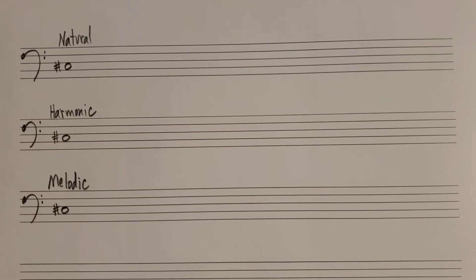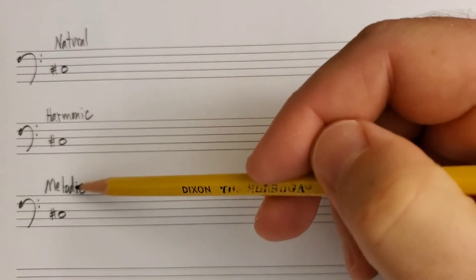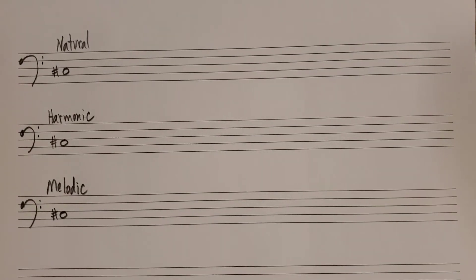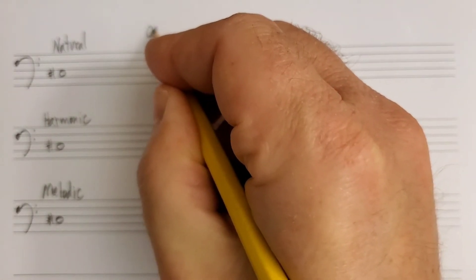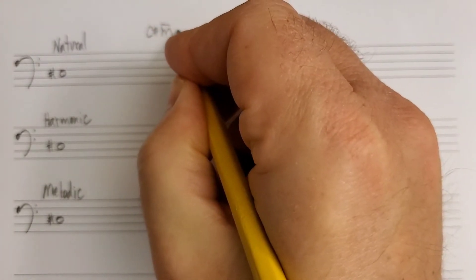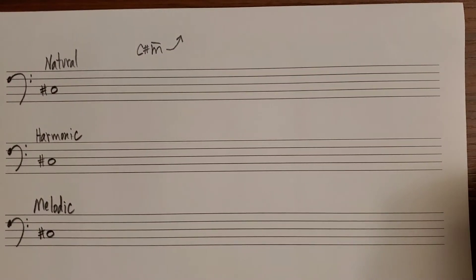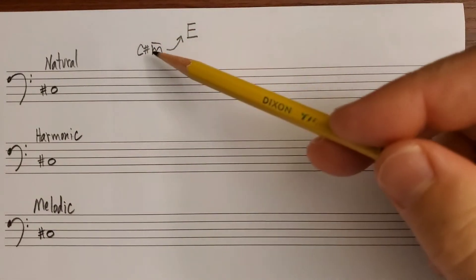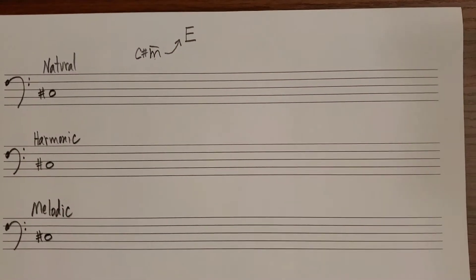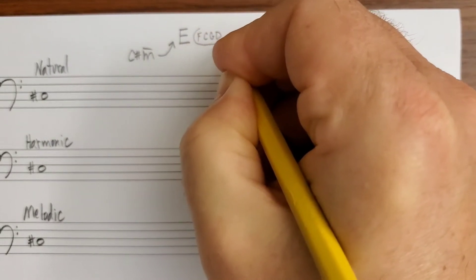Next we're going to take a look at C sharp minor in the bass clef. We'll write natural minor, harmonic minor, and melodic minor for C sharp minor. The first step again is to figure out the key signature. If we're given C sharp minor, think up three half steps to the relative major: C sharp to D, D to D sharp, D sharp to E. So C sharp minor has the same accidentals as E major. E major has F, C, G, and D sharps — four sharps.